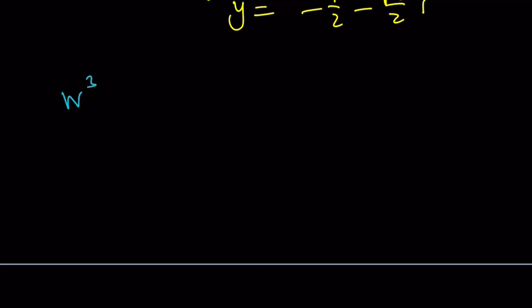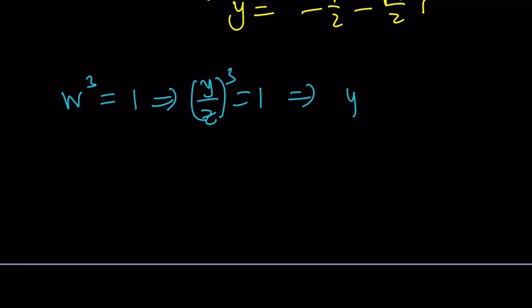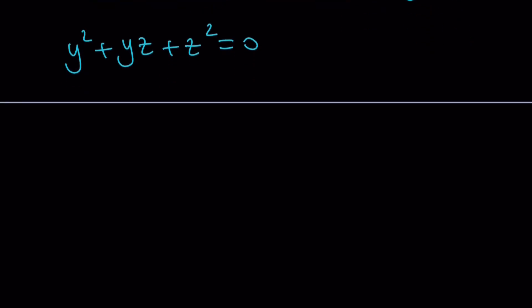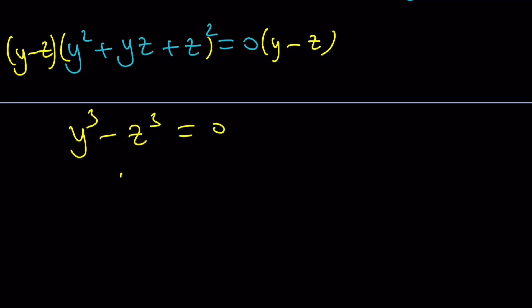We found w cubed equals 1, which implies (y over z) cubed equals 1, and therefore y cubed equals z cubed — but y does not equal z. In other words, we find two different complex numbers whose cubes are equal. You could also go back to y squared plus yz plus z squared equals 0, multiply both sides by (y minus z), get the difference of two cubes with two variables, and again arrive at y cubed equals z cubed.